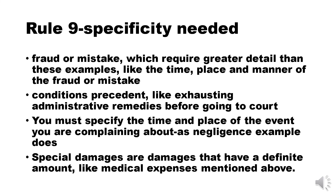Rule 9 does require specificity, and here's where it's needed. If you're going to allege fraud or mistake, you're going to need greater detail, like time, place, and manner of the fraud or mistake. If there are conditions precedent, like exhausting administrative remedies, you have to state that in your complaint. You must specify the time and place of the event you are complaining about, such as negligence in the previous example. Special damages — damages that have a definite amount, like medical expenses — also need to be specified in your complaint.